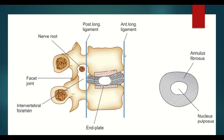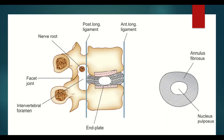There are ligaments anterior to the vertebral body — that is the anterior longitudinal ligament — and posterior to the vertebral body is the posterior longitudinal ligament. These ligaments help to provide stability to the vertebral column. So what is a prolapsed intervertebral disc? It is the protrusion or extrusion of the nucleus pulposus through the annulus fibrosus, if there is any defect in the annulus fibrosus.